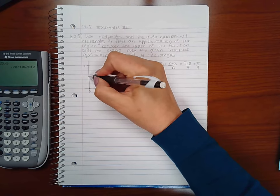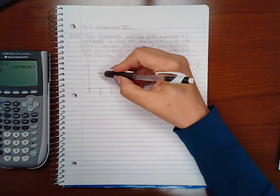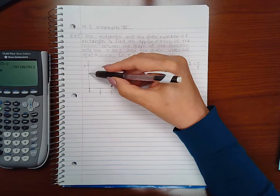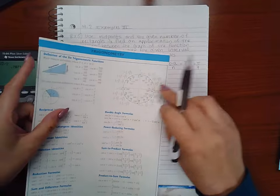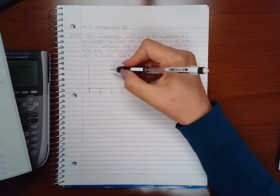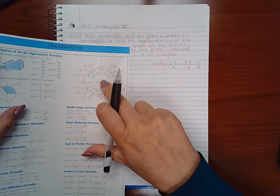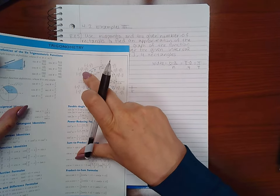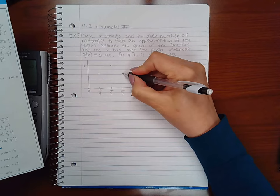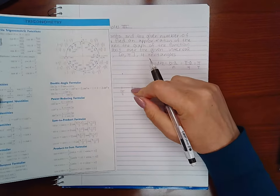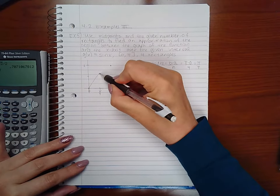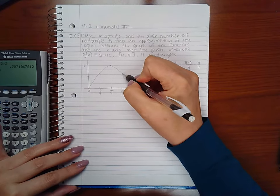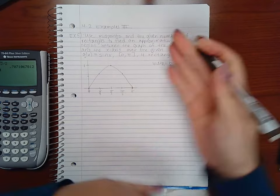Then sin of π/2 is going to be 1. And then 3π/4 is going to be the y value square root of 2 over 2 again. And then the y value at π is going to be 0 again. So this is what the graph looks like.